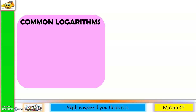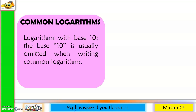Next, we have what we call common logarithms. These are logarithms with base 10. The base 10 is usually omitted when writing common logarithms. So when you see log of x, it is equivalent to the logarithm of x to the base 10. Whenever there is no base written, it is understood that the base is 10.